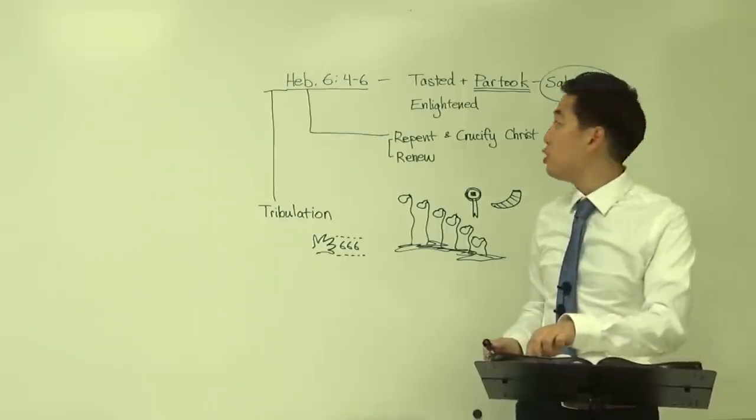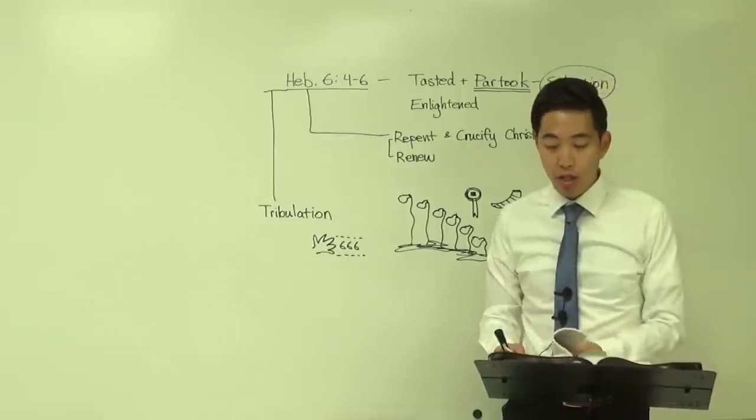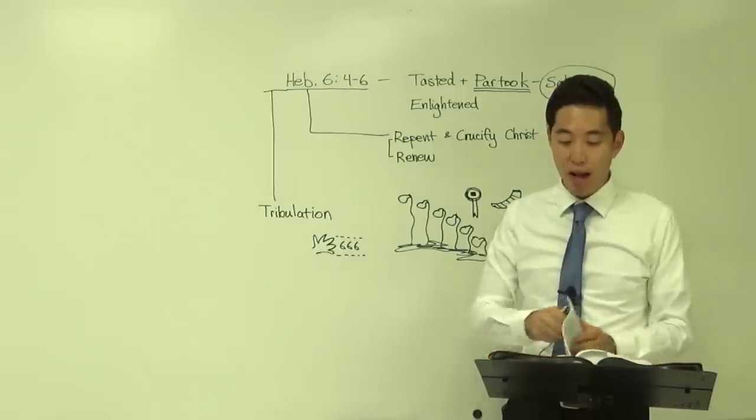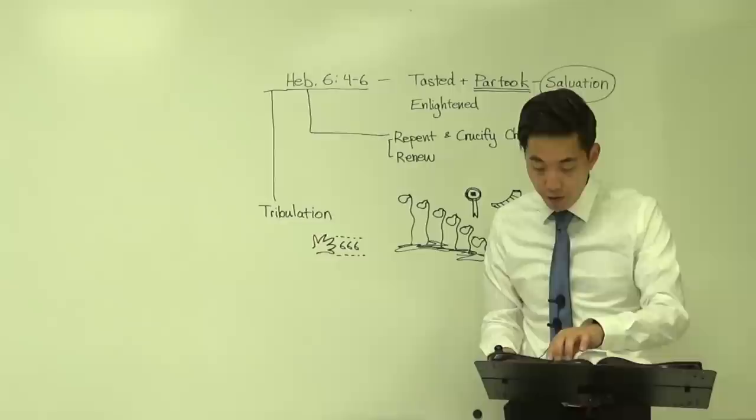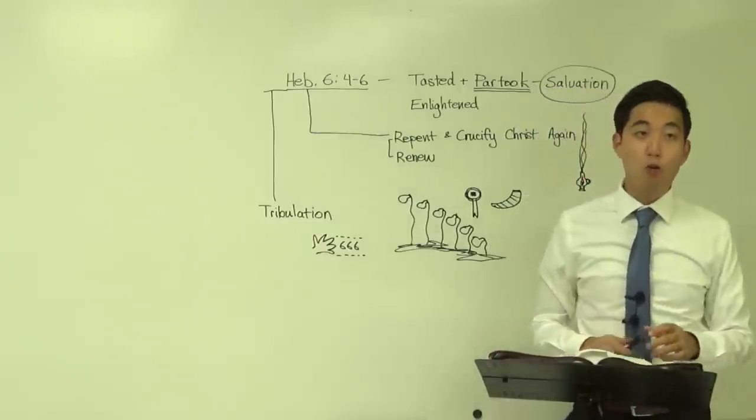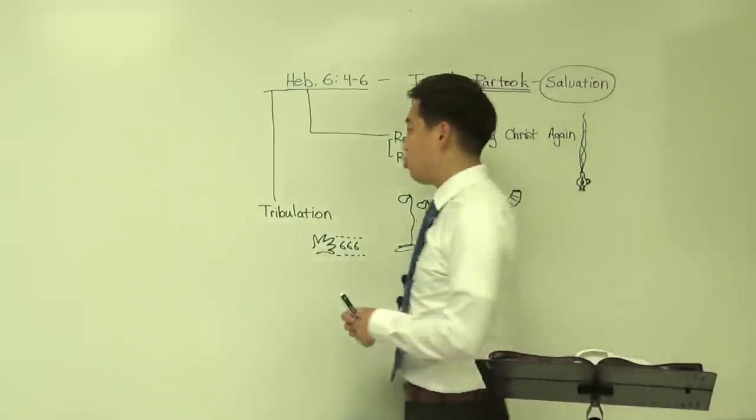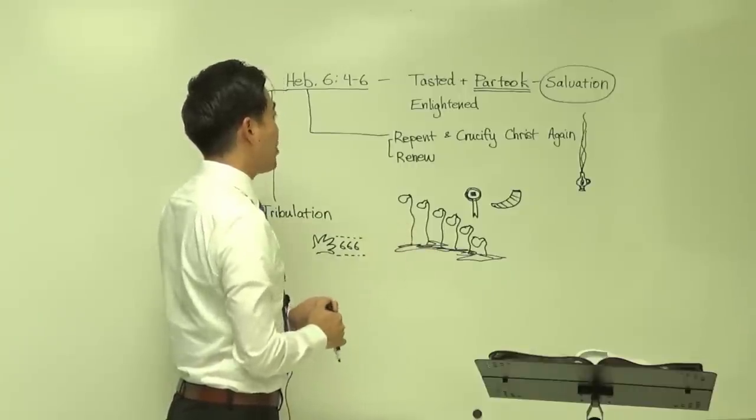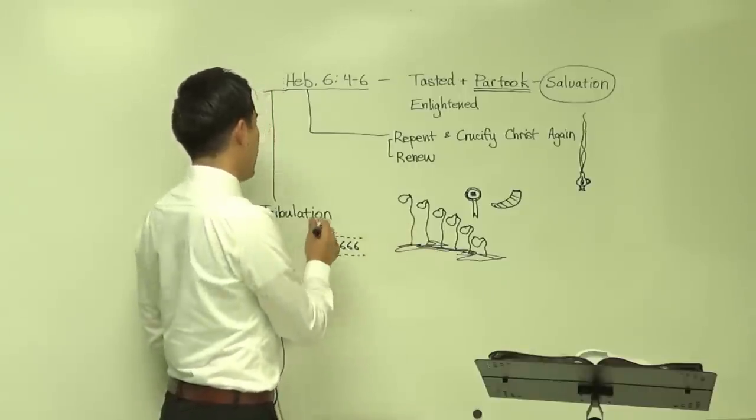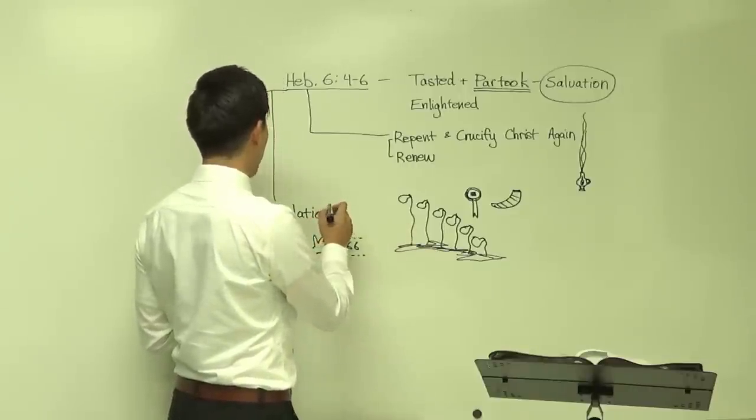Now, I can give you one way of getting around this, which is very, very clever actually. If you go to Hebrews chapter 6, Hebrews 6. The clever way that you can get around this, which it can actually support eternal security. And remember, book of Hebrews is not just tribulation application. It's a what kind of application? Double.